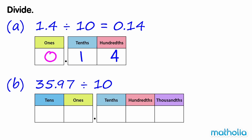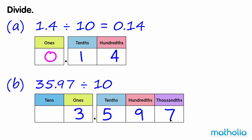B. 35.97 divide 10. Write 35.97 in the place value chart. Shift the digits one place to the right. 35.97 divide 10 equals 3.597.